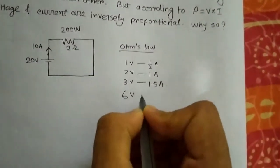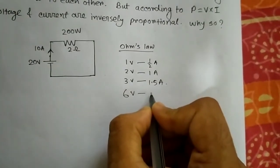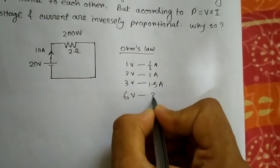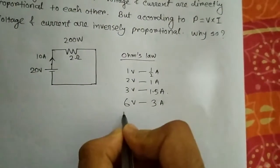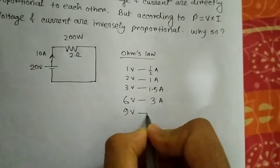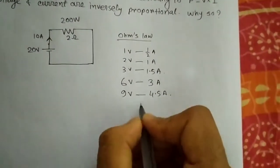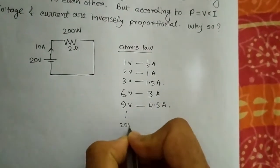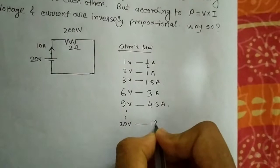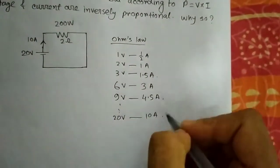If I have 6 volts, then I will have 3 amperes of current. And if I have 9 volts, I will have 4.5 amperes of current. And according to this, if I have 20 volts, then I will get 10 amperes of current. In each and every case you can see the resistance will come to 2 ohms.